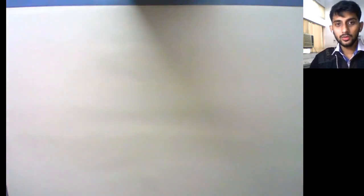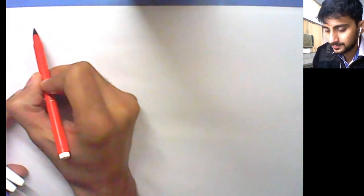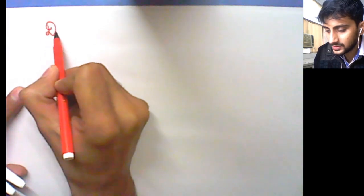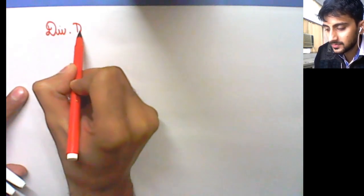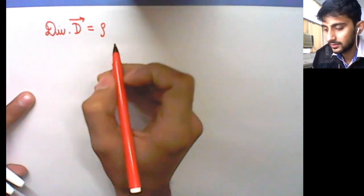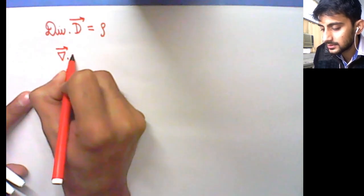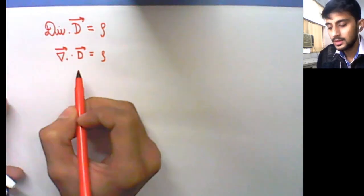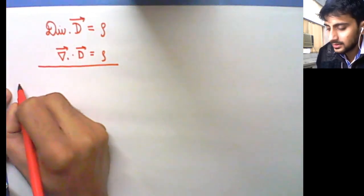Good morning. We will start doing the derivation of Maxwell's equations. We will try to separate out the two forms — differential and integral form — and we'll try to physically interpret the meaning of each and every equation. The very first Maxwell's equation is: divergence of electric displacement vector equals the volume charge density.